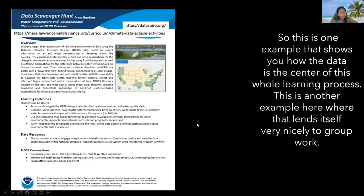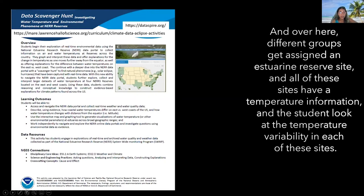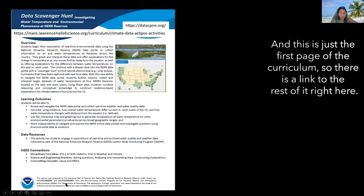Here is another example that lends itself very nicely to group work. Different groups get assigned an estuarine reserve site, and all of these sites have temperature information. The students look at the temperature variability in each of these sites. This is just the first page of the curriculum — there is a link to the rest of it.